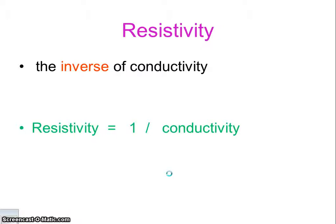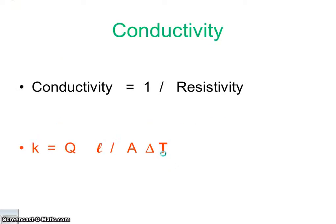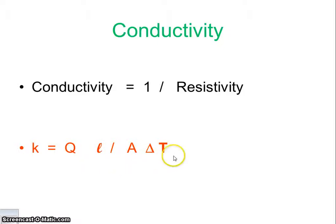Resistivity — as you probably guessed — is the inverse of conductivity. So resistivity equals 1 divided by conductivity, and conductivity equals 1 over resistivity. If we rearrange the heat flow equation, we get K equals heat flow rate times thickness, divided by area times delta T.